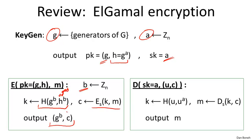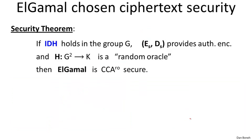The way we decrypt, as we've seen before, is basically by hashing U and the Diffie-Hellman secret, decrypting the symmetric system, and outputting the message M. In the last segment, we said that Elgamal is chosen ciphertext secure under this interactive Diffie-Hellman assumption.